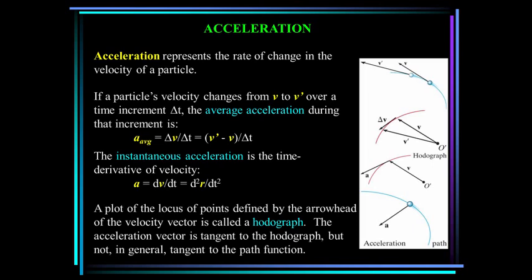Acceleration represents the rate of change in the velocity of a particle. If a particle's velocity changes from V to V prime over some time increment, the average acceleration is the vector subtraction V prime minus V over delta T. The instantaneous acceleration is the time derivative of the velocity.